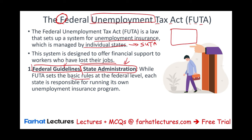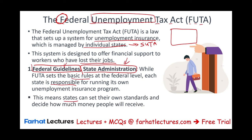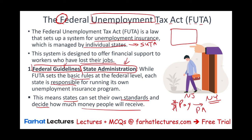While FUTA sets up the basic rules at the federal level, each state is responsible for running its own unemployment insurance program. States can set their own standards and decide how much money people will receive when they lose their job. So if you live in Pennsylvania, New Jersey, or New York, you get the money from that state — and the payout could be different from state to state, because each state has its own standards and requirements.